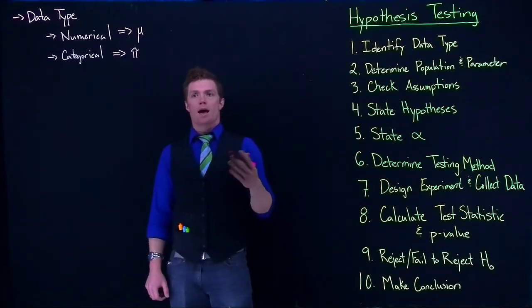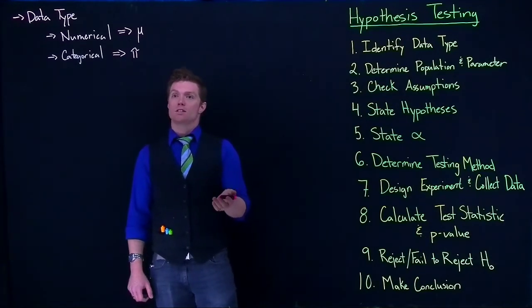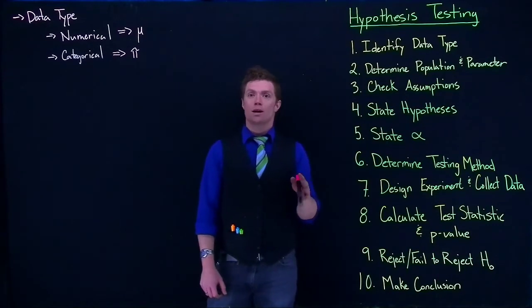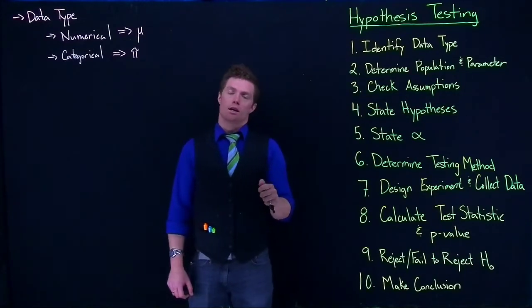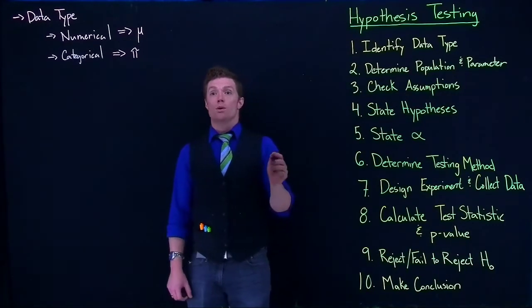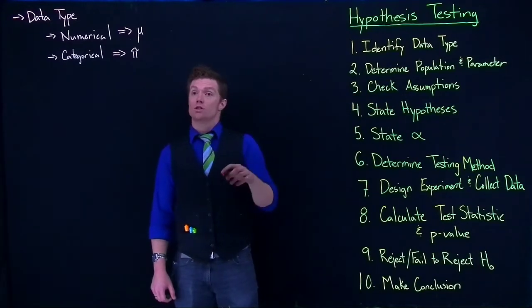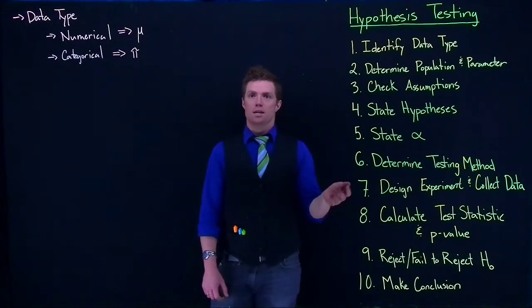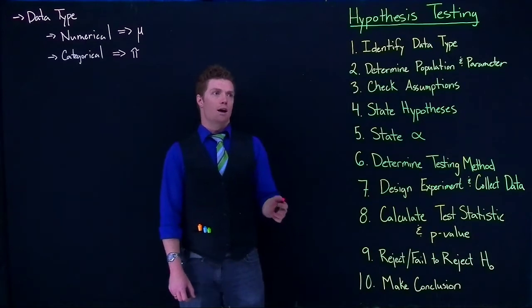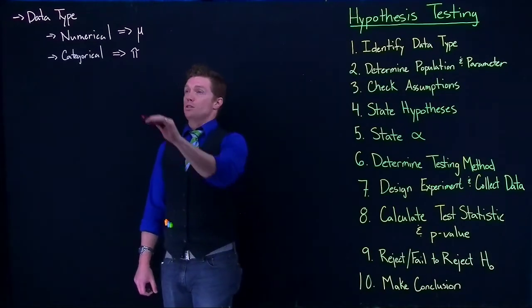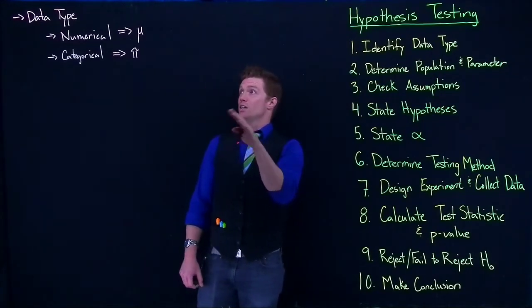If we remember back to when we were calculating out our confidence intervals, there were slightly different ways of how we calculated out our margin of errors if we were dealing with proportions versus if we were dealing with means. And that holds true here in our hypothesis testing. So that's the first thing that we need to do: our data type.